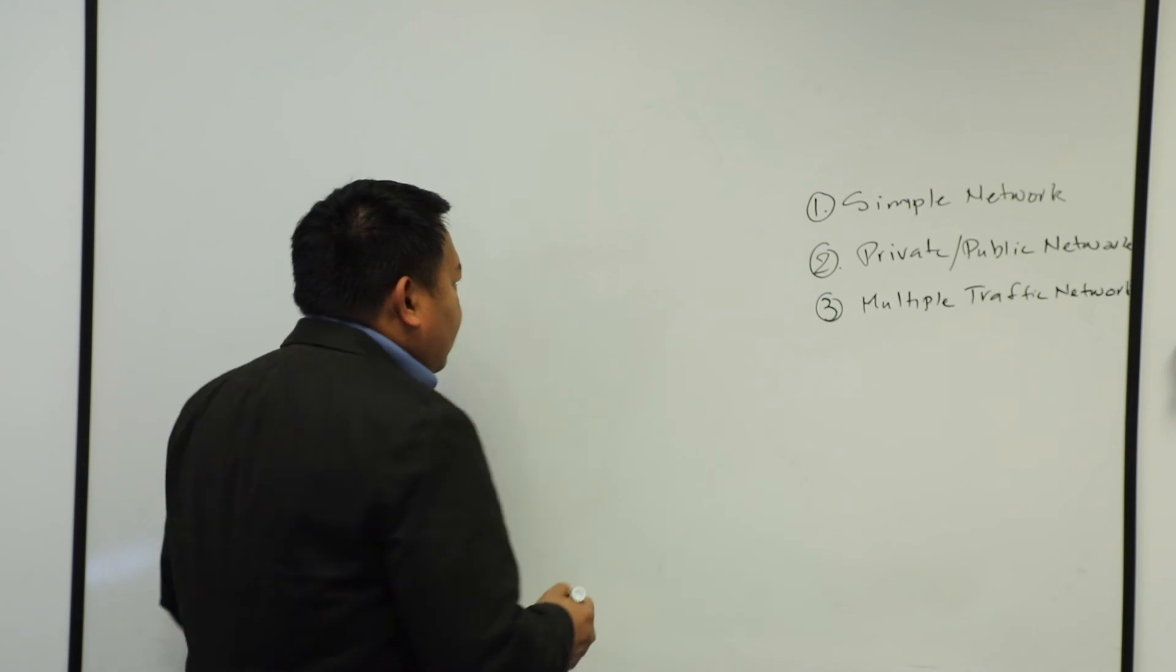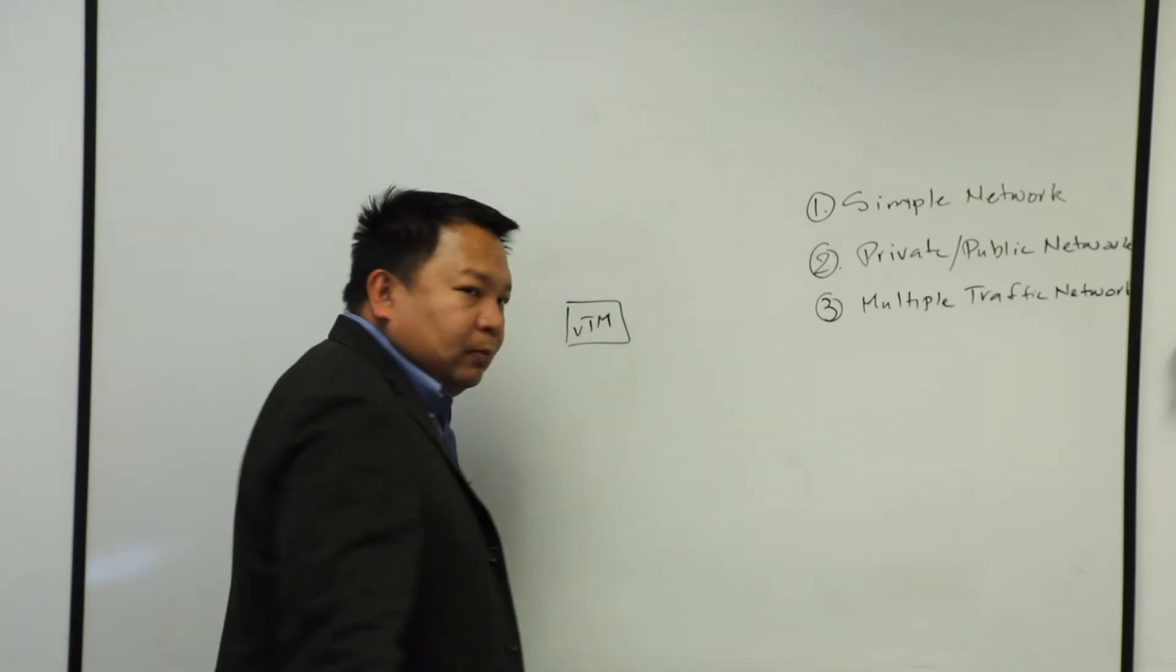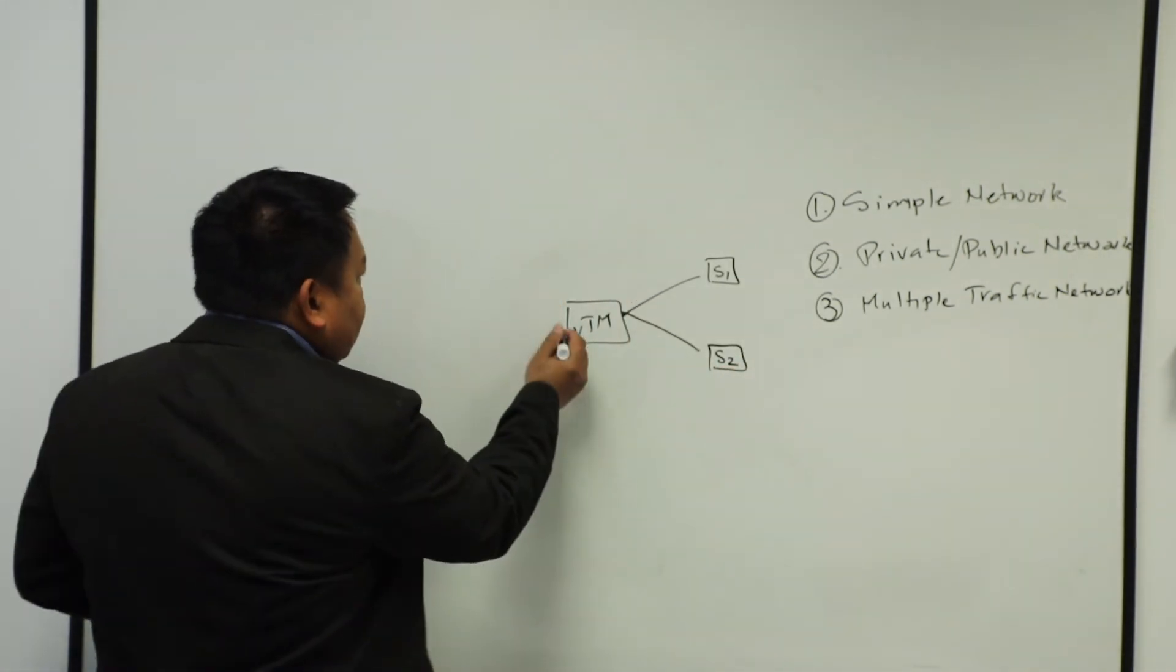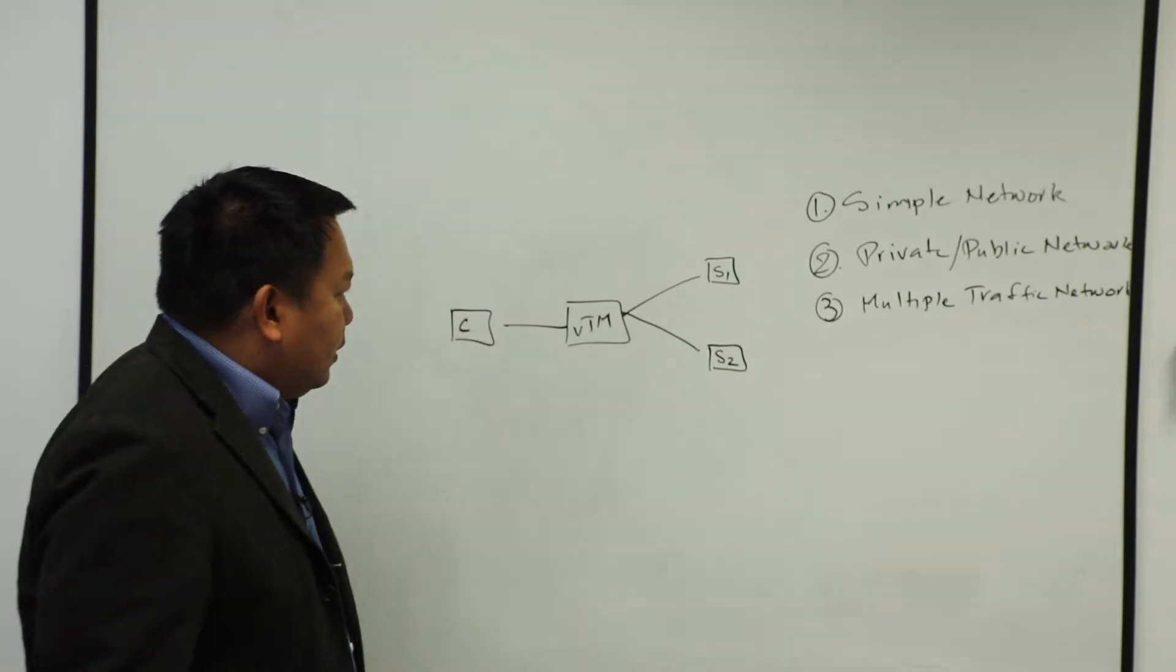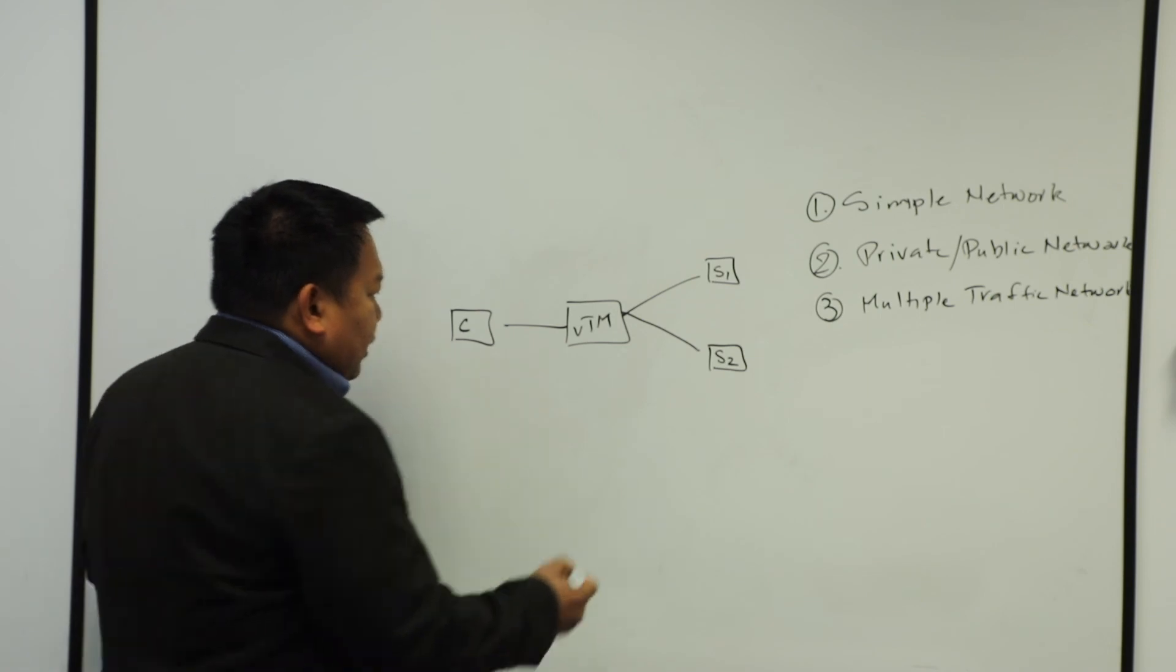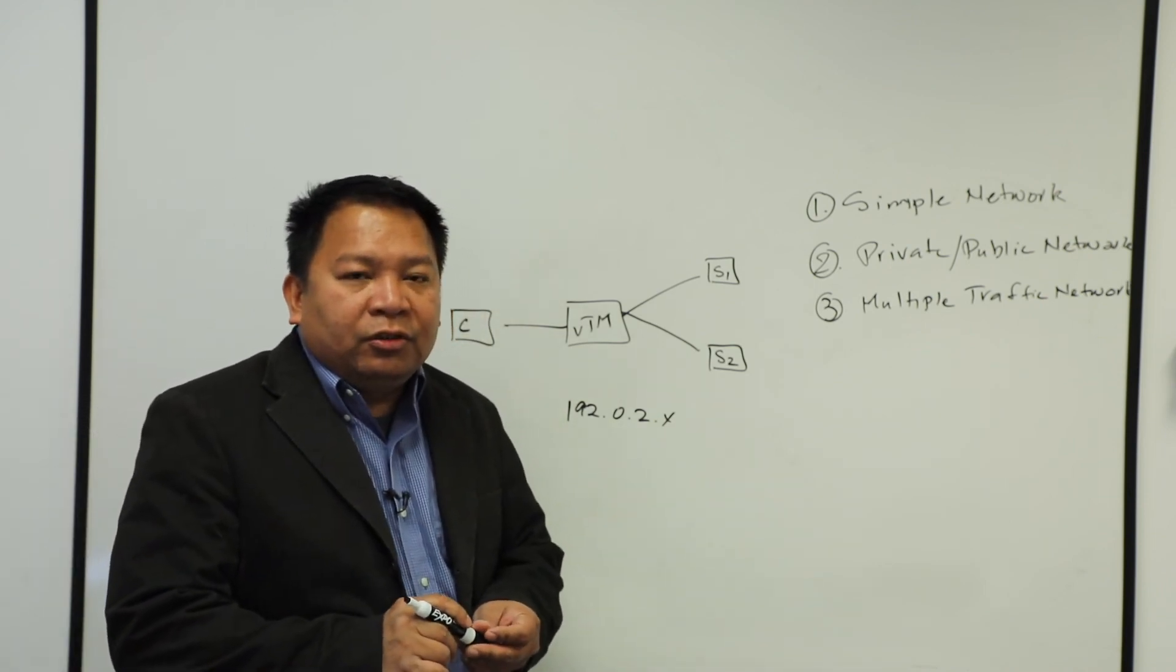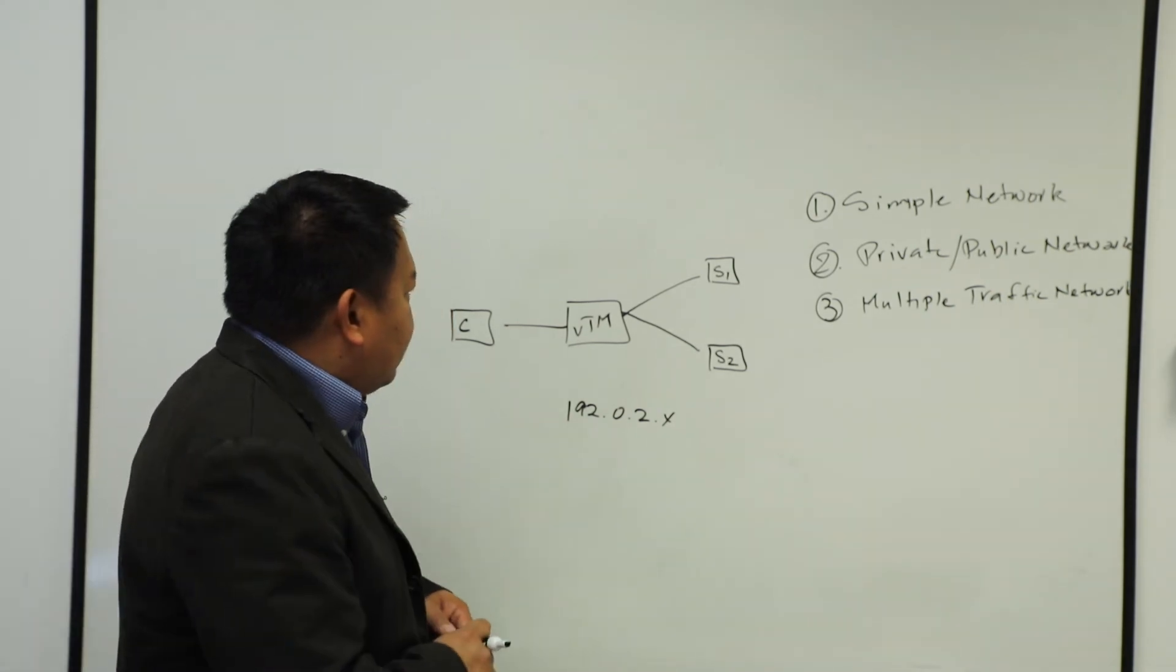So let's start with the simple network. A simple network configuration, we deploy our VTM, Traffic Manager, in the middle. And typically we have our servers and then we have our client network. Okay, so we'll have multiple clients here. In the simple network, we call this thing also as a flat or layer 2 topology. Our address space is going to be 192.02.x.